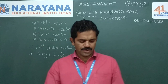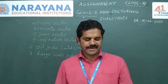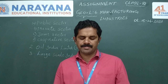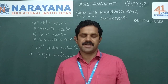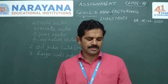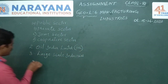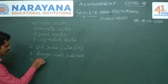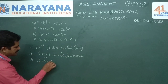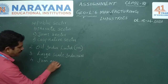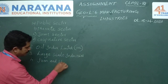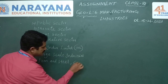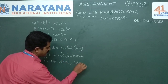Question number four: Name two examples of mineral-based industries. Two examples for mineral-based industry are iron and steel industry, as well as cement industry.